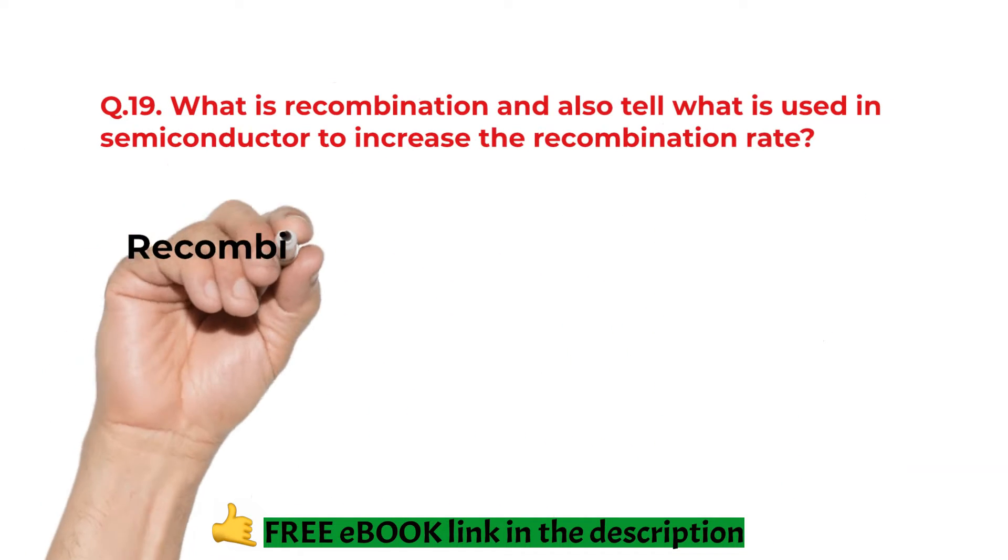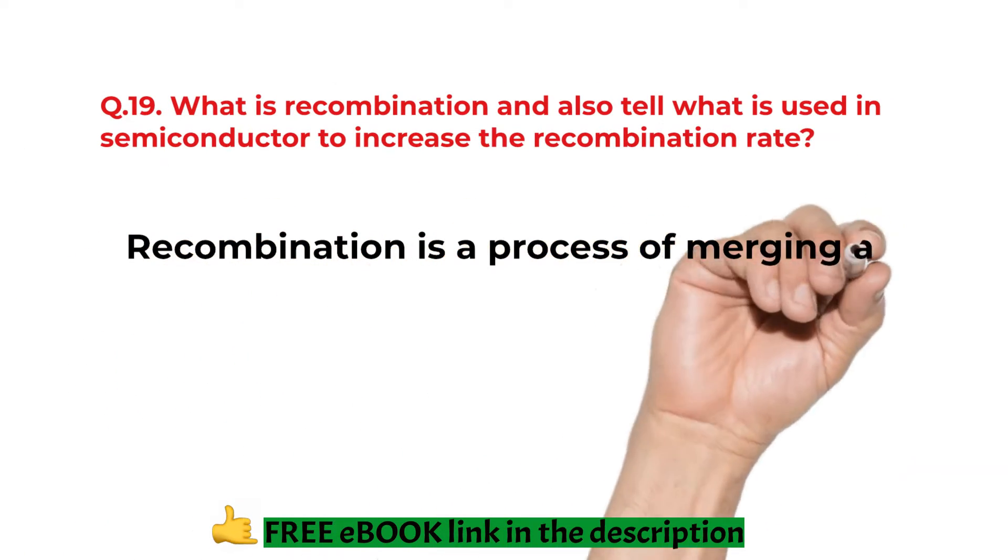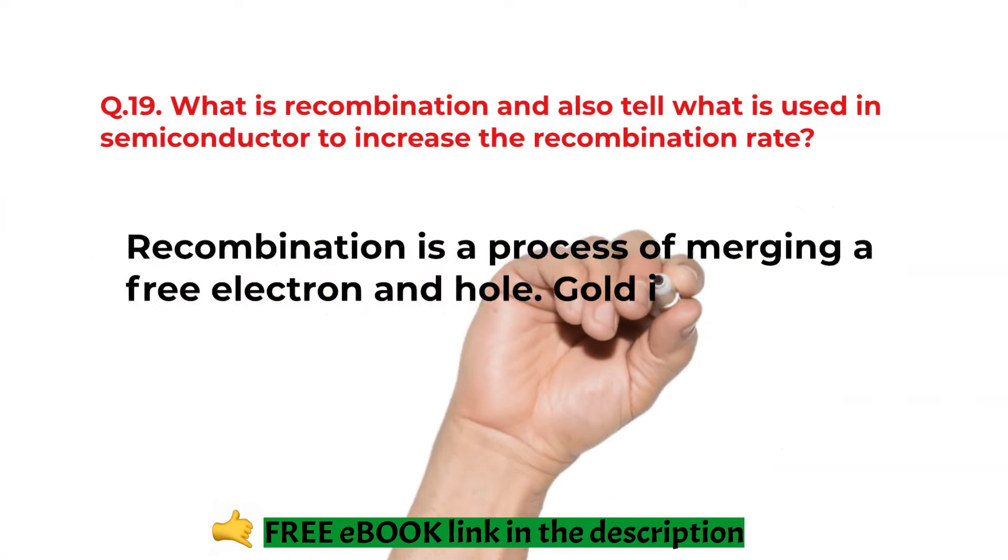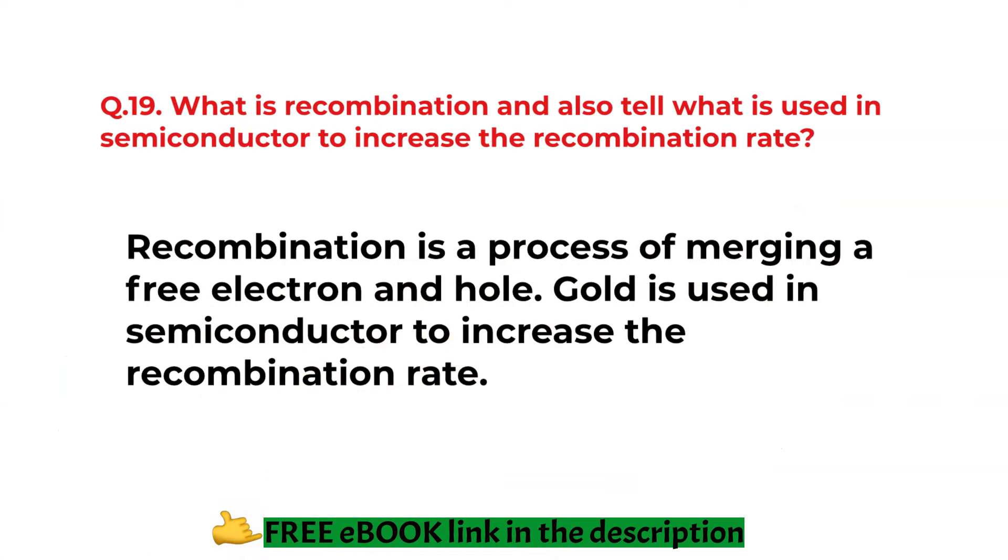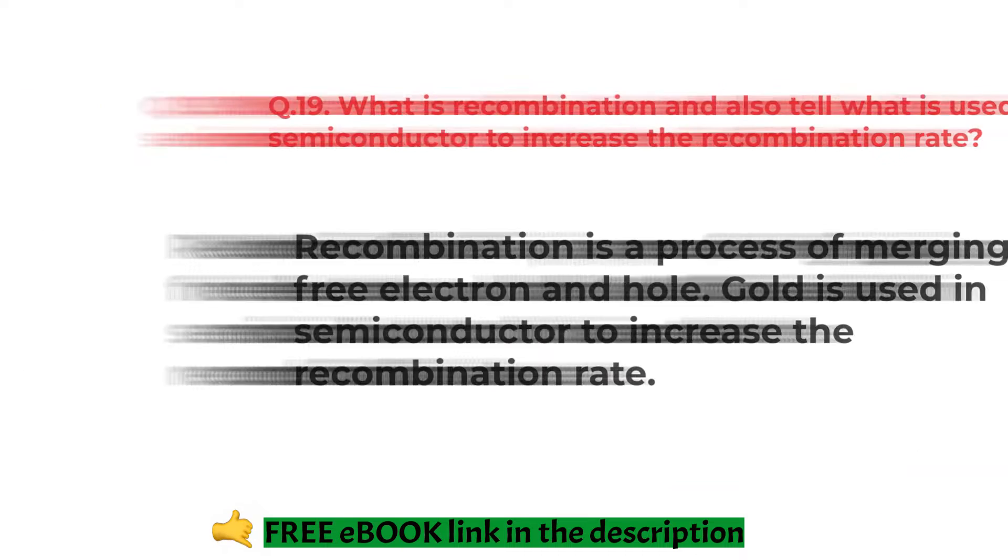What is the recombination and also tell which semiconductor is used? Recombination is the process of merging a free electron and hole. Gold is used in the semiconductor to increase the recombination rate.